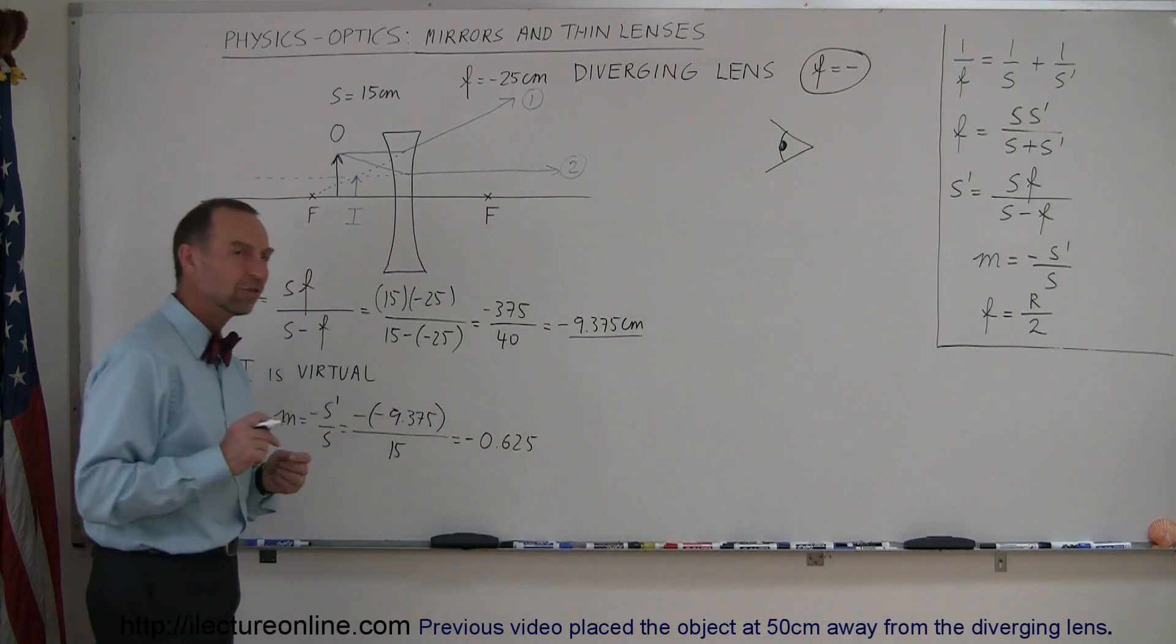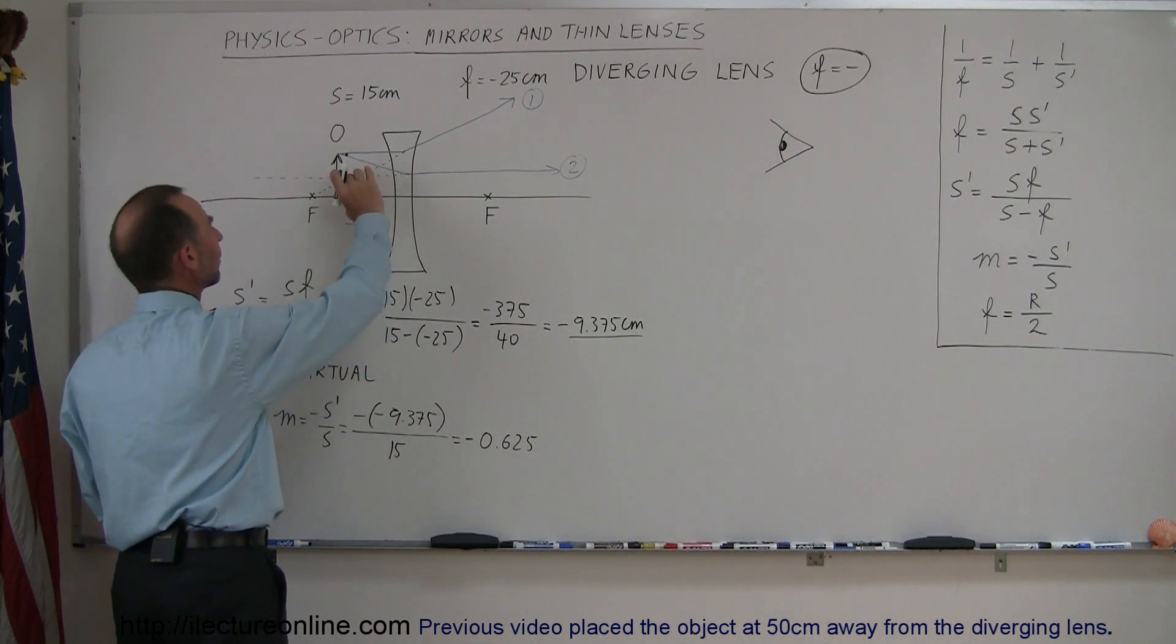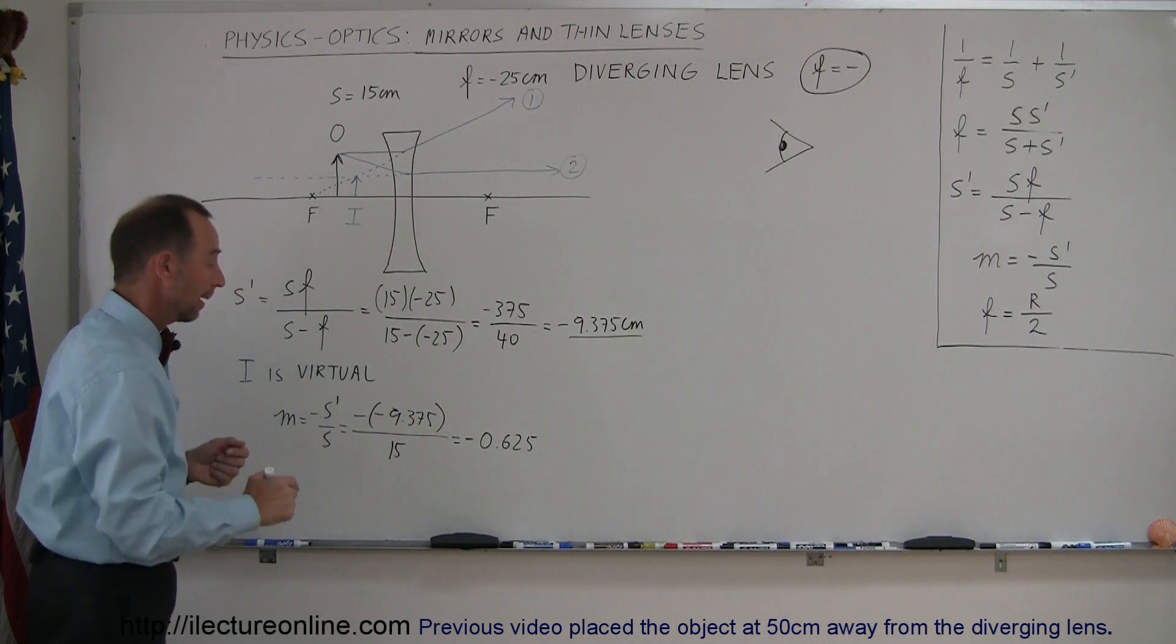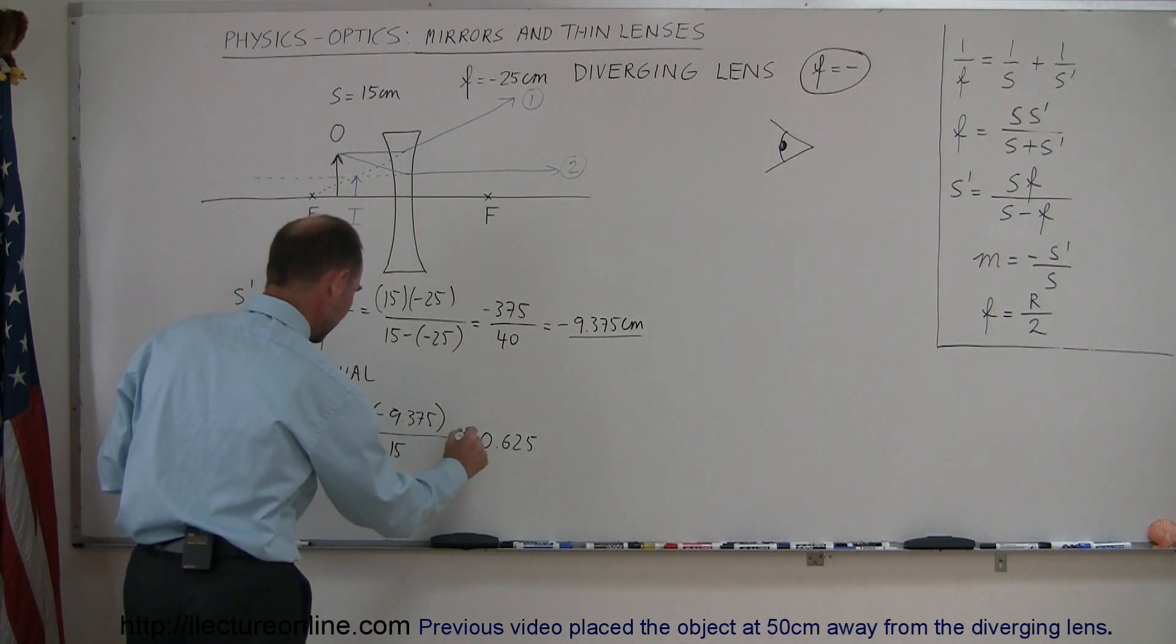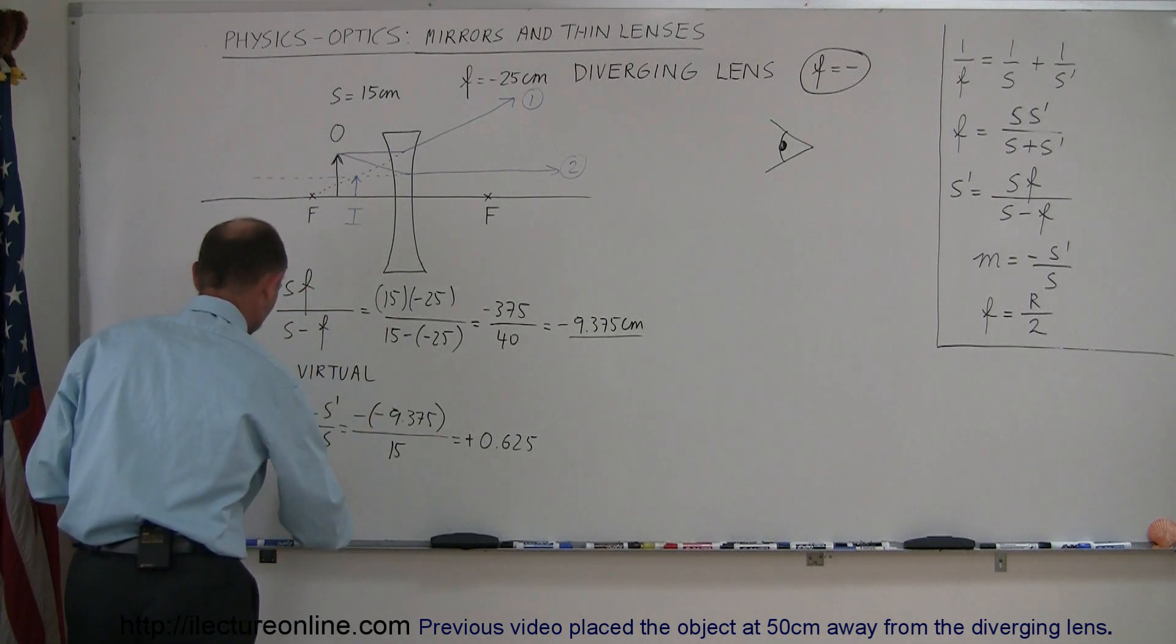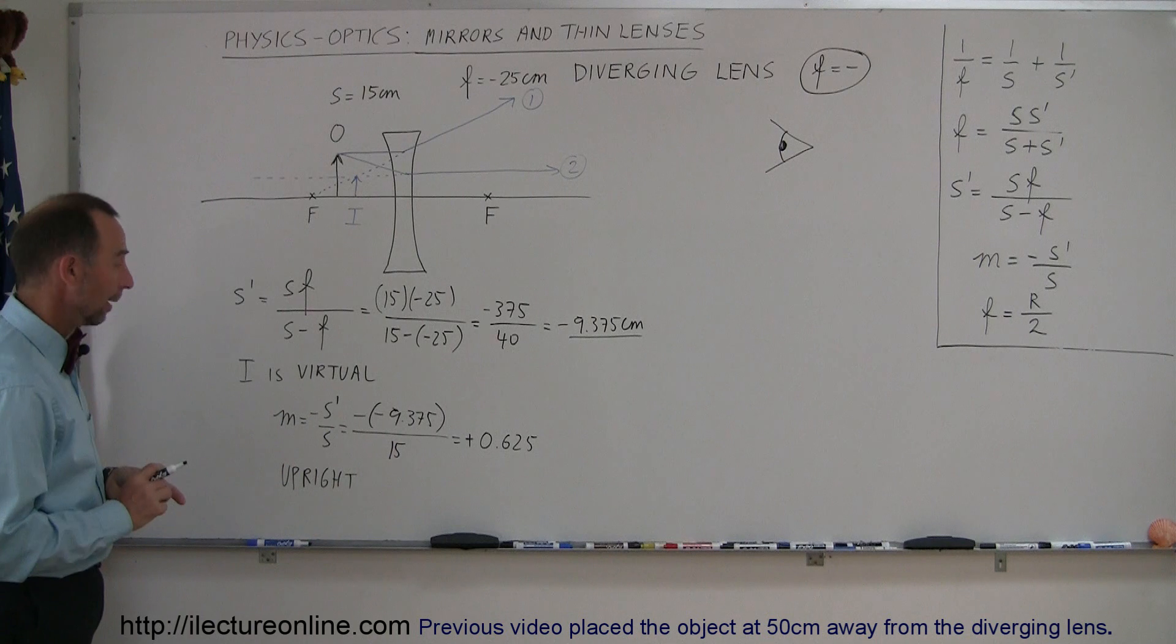Notice now that the image is a little bit larger, the magnification. So when we bring the object in closer, the image will become a little bit larger, still smaller than the original object. Let's see here. And it should be a plus, because a minus times a minus is a plus, the denominator is a plus. And plus means that it is upright. So the image is upright, the magnification is 62.5% of the original object.